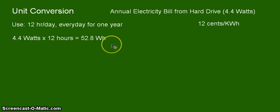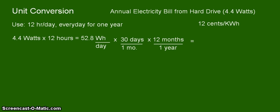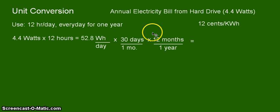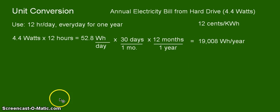Now, we need to multiply that with the amount of days per month. This is where the conversion factors or unit conversion come in. We have already calculated that we are going to use 52.8 watt hours per day. We have 30 days in a month — that is one of your conversion factors. Then we have 12 months in a year — that is another conversion factor. All we need to do now is do the calculation to get the amount of energy we are using per watt hour for the whole year, and the answer is 19,008 watt hours per year.